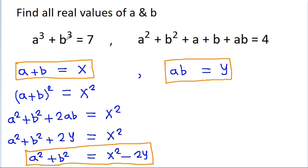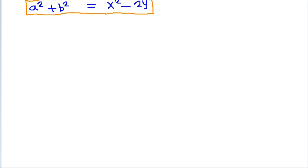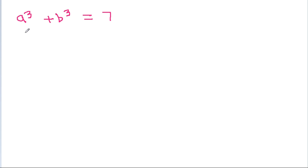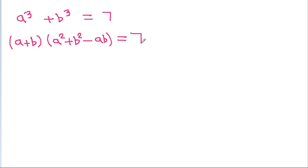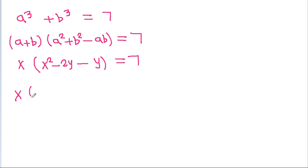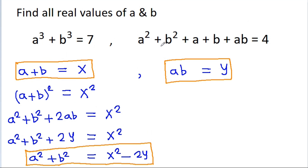We have given that a⁴ + b⁴ is equal to 7. And a⁴ + b⁴ is equal to (a + b) × (a² + b²) − ab, which gives us x times (x² − 2y) minus y is equal to 7.